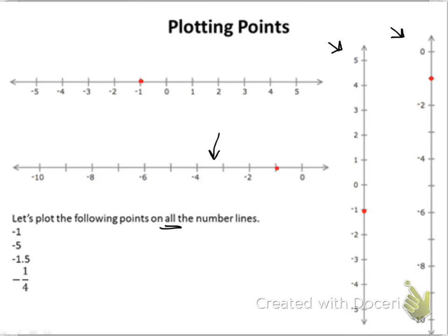We're going to do negative 5 next. On my first number line I see negative 5 right there, so I am just going to put my point on it and I am done. On my second number line, I don't see a negative 5, but I remember that it moves by 2s. So I know that negative 5 would be between negative 4 and negative 6 — that's where I'm going to put it. My next number line is vertical and I actually see our negative 5 on it way down here, so I put my negative 5 right there, centered. The last number line is also moving by 2, so negative 5 is between negative 4 and negative 6.